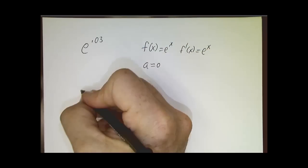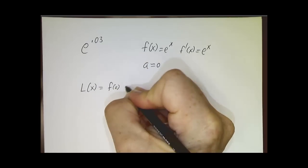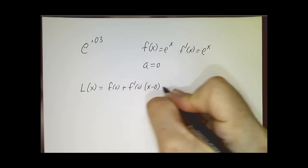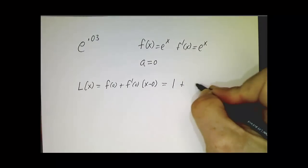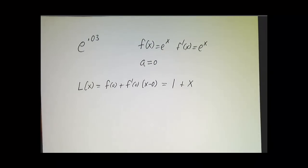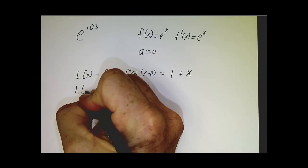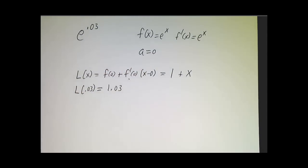So our linearization is f plus f prime times x minus 0, which is 1 plus 1 times x minus 0. So L of 0.03 is 1.03. That's our approximation for e to the 0.03.